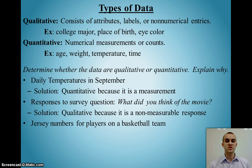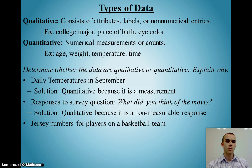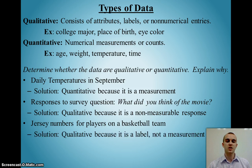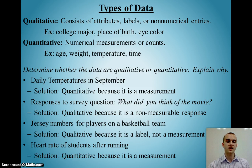Jersey numbers for players on a basketball team — jersey numbers may be numbers, but they're not actually measurements or counts. They're just labeling that person with a number so that they can be identified when they score, steal, or foul. It's a label for that person, and if it's a label, that's qualitative data. And the last one: a heart rate of students after running. Heart rate is something that I measure, so if it's a measurement, that is quantitative data.